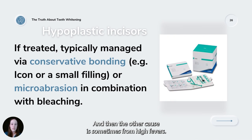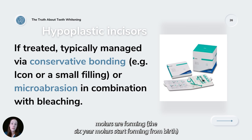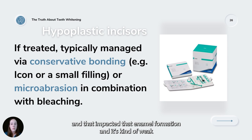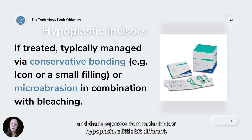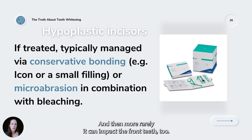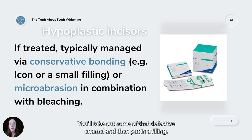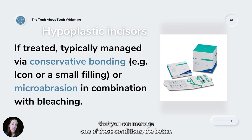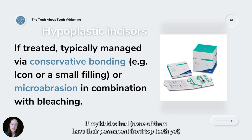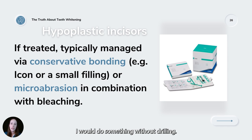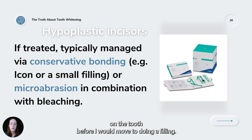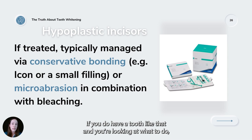Hypoplasia can also come from high fevers. If children have really high fevers while their six-year molars are forming — which start forming from birth — repeated high fevers from ear infections, for example, can impact enamel formation, making it weak. That's another common cause. Treatment options include ICON resin, conservative bonding, microabrasion, or in some cases small fillings where defective enamel is removed. But there is nothing better for your tooth than your natural tooth structure, so manage as conservatively as possible — try bleaching, microabrasion, or ICON resin before drilling.